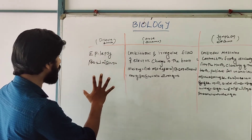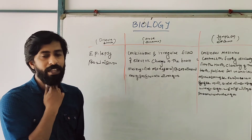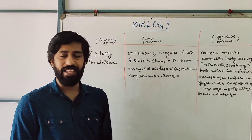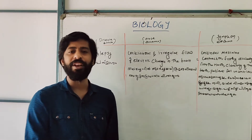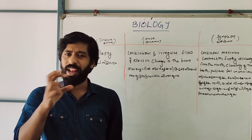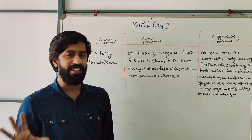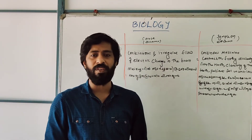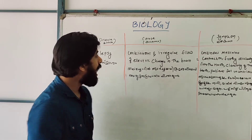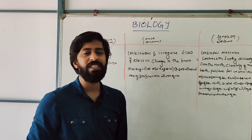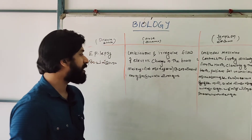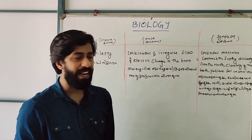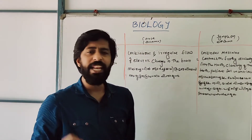We are going to talk about epilepsy. This epilepsy is the continuous and irregular flow of electric charges in the brain. What are the symptoms of this disease?